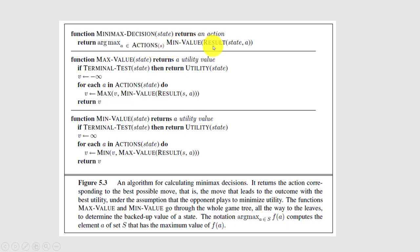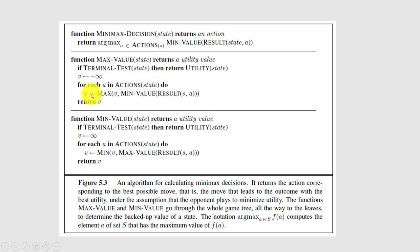The function max_value takes state as input and returns a utility value. If it is a terminal test, it returns the utility of the state. Otherwise, V is initialized to negative infinity, and for each action in actions of state, we compute the max of the current V and the min_value of the result of state and action, then return V.